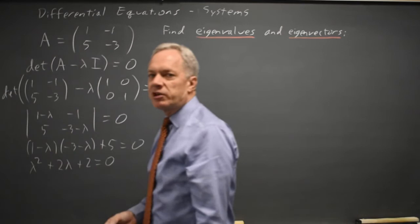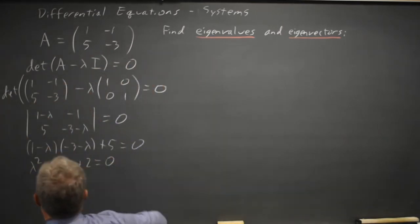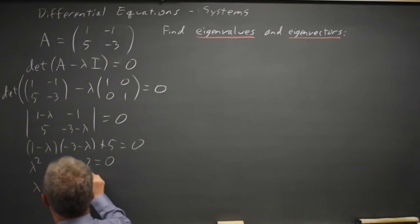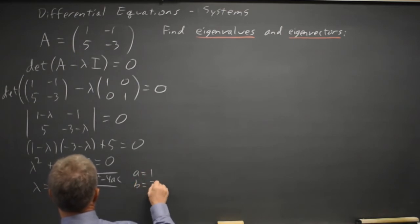And we may recognize that as something we can't factor, so we're going to use the quadratic formula. Lambda equals negative b plus or minus root b squared minus 4ac over 2a, where a equals 1, b equals positive 2, c equals positive 2.